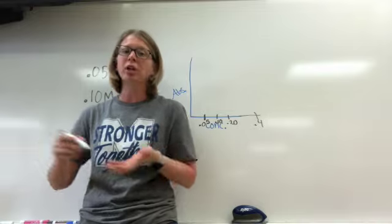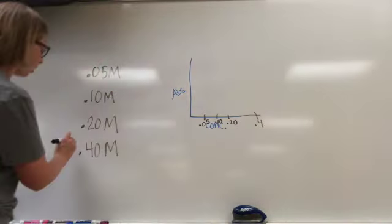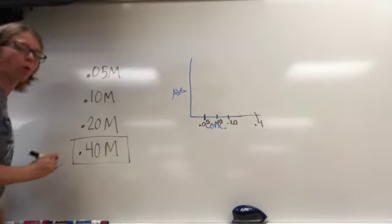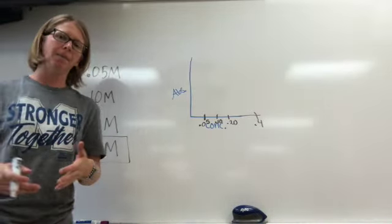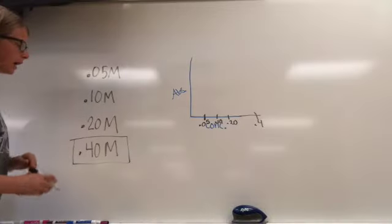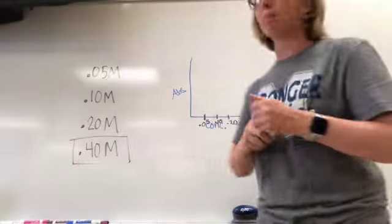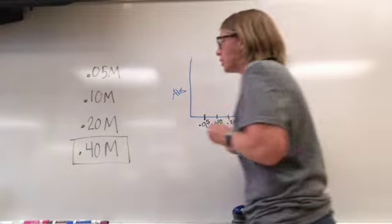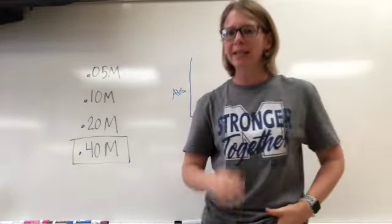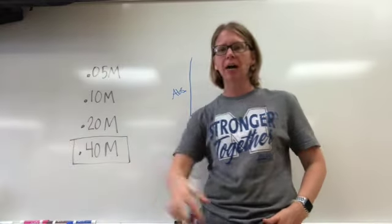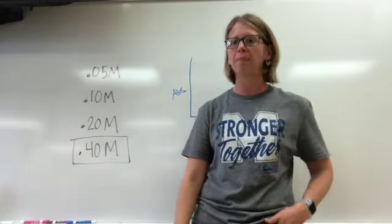First, you're going to have to make some solutions. In the stock room, all I have is 0.4 molar copper nitrate. So I need to make solutions that are 0.2, 0.1, and 0.05 molar. We're going to have to do some dilution calculations from the beginning of this unit in order to do that.